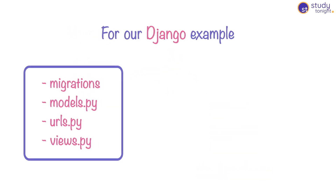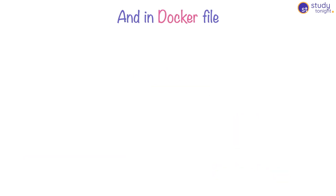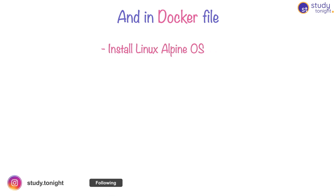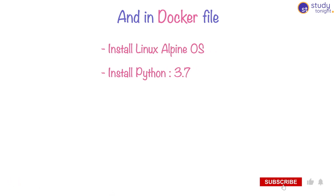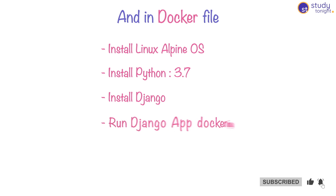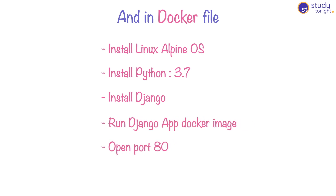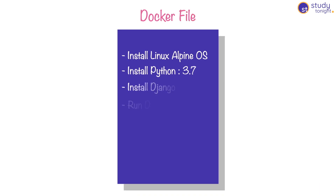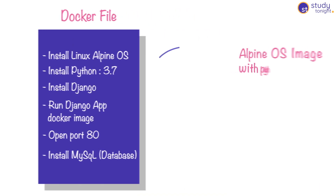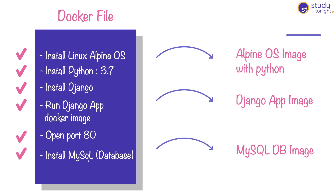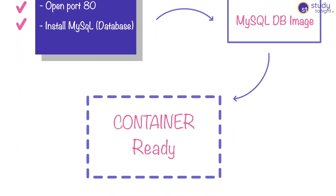For the Django application example we discussed, we will create a Docker image, and in the Dockerfile we will have the following steps: install Linux Alpine operating system, install Python 3.7, install Django, run the Docker image for our application, open port 80 for the web application, and any other steps required by the application — like installing a database. So whatever requirements you mention in the Dockerfile, Docker gets the Docker images for all the services and software that need to be installed and creates the container.